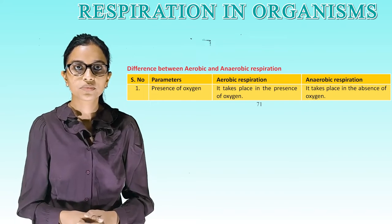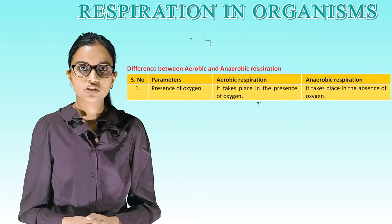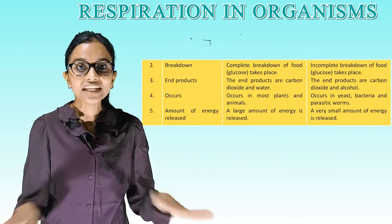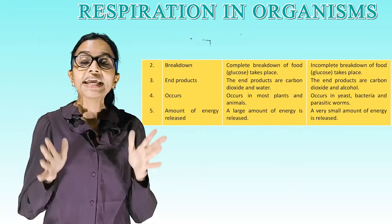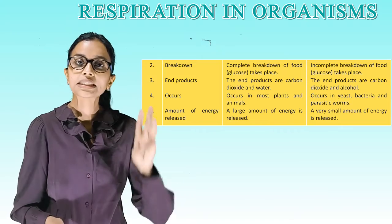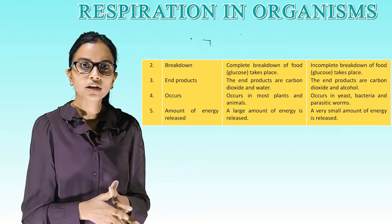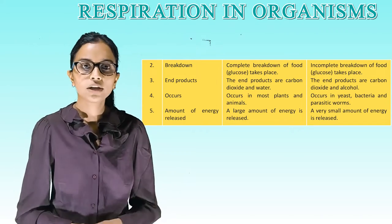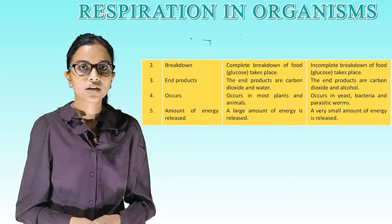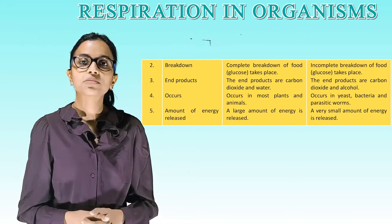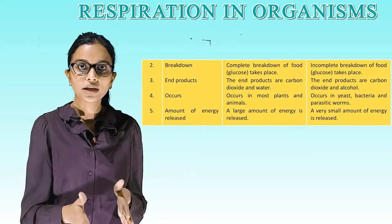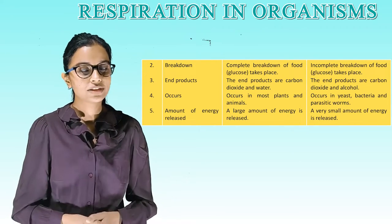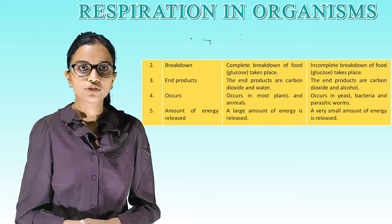Difference between aerobic and anaerobic respiration: 1. Aerobic respiration takes place in the presence of oxygen; anaerobic takes place in the absence of oxygen. 2. In aerobic respiration, complete breakdown of glucose takes place; in anaerobic, incomplete breakdown occurs. 3. End products of aerobic respiration are carbon dioxide and water; end products of anaerobic respiration are carbon dioxide and alcohol. 4. Aerobic respiration occurs in most plants and animals. 5. Anaerobic respiration occurs in yeast, bacteria, and parasitic worms. 6. A large amount of energy is released in aerobic respiration; a very small amount is released in anaerobic respiration.